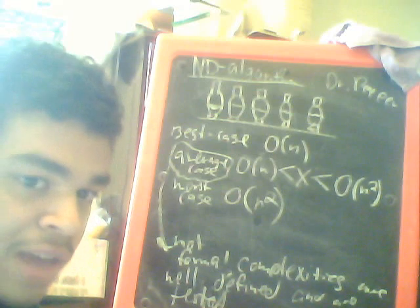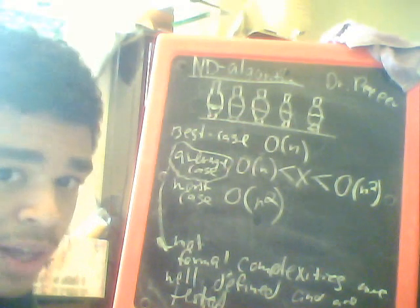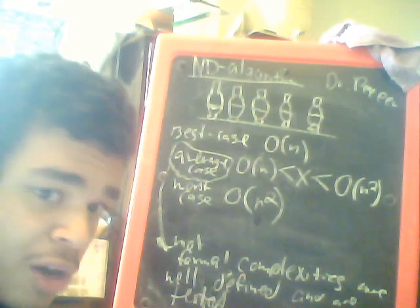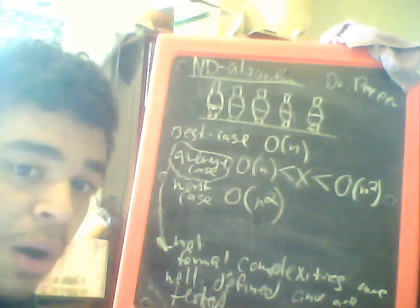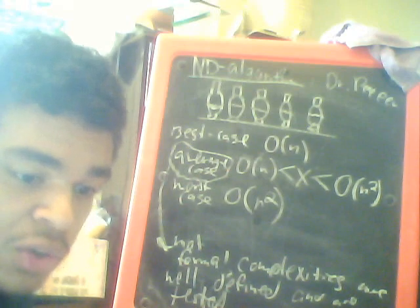All right, so that's a basic idea of best, average, and worst case complexities in terms of a little bubble sort adaptation of Dr. Pepper algorithm. And so that's all for now. I hope you guys enjoyed. See you guys later.